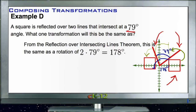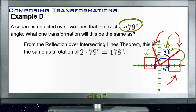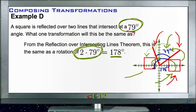By reflecting over those two lines twice, we end up doing the same thing as rotating the original figure. We find the rotation angle by taking the degrees between the two lines and multiplying by 2. Since it's 79 degrees between the lines, we get 2 × 79 = 158 degrees. So we could take our original figure and rotate it 158 degrees to reach the new position.